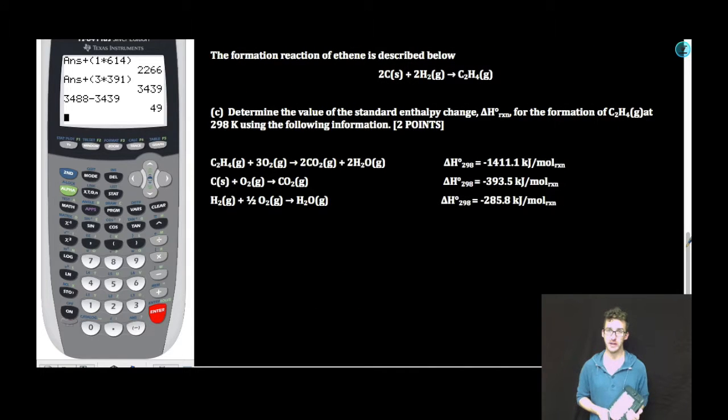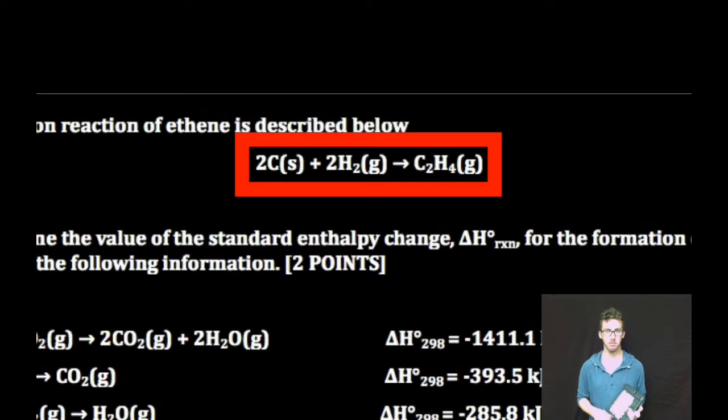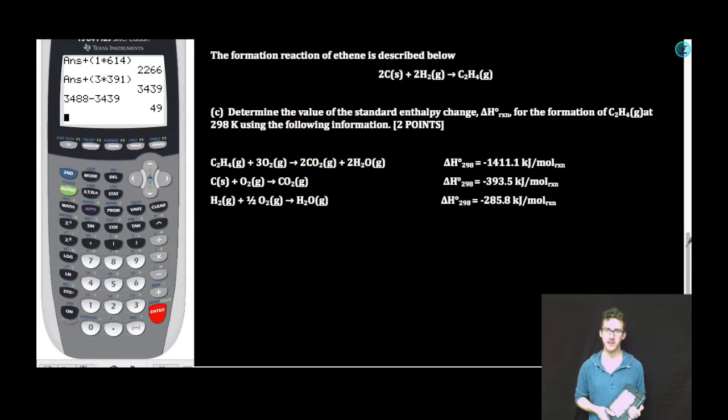The formation reaction of ethene is described below. Part C. Determine the value of the standard enthalpy change for the formation of ethene at 298 Kelvin using the following information. Recall that a formation reaction is going to be the formation of one mole of a compound from its elements in their standard state. Although not necessary to answer this question, important vocabulary to keep in the back of your mind.